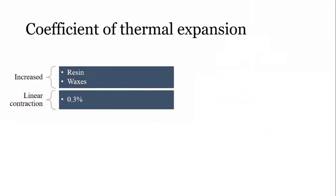What is the coefficient of thermal expansion? For an impression material, this property increases with an increase in the composition of resin and wax. When the impression is taken out from the mouth, the temperature in the mouth and the room will be different. This gives rise to linear contraction of about 0.3 percent.